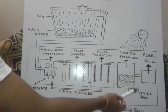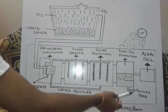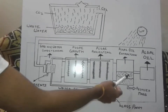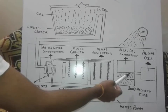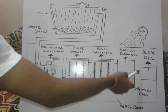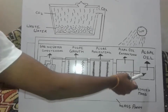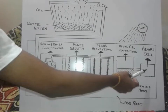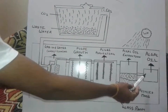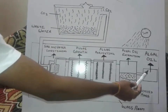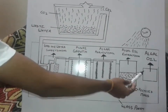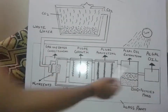Algae will be light and can be used in power stations. Algae oil can be used as a substitute for diesel and petroleum in cars and vehicles.